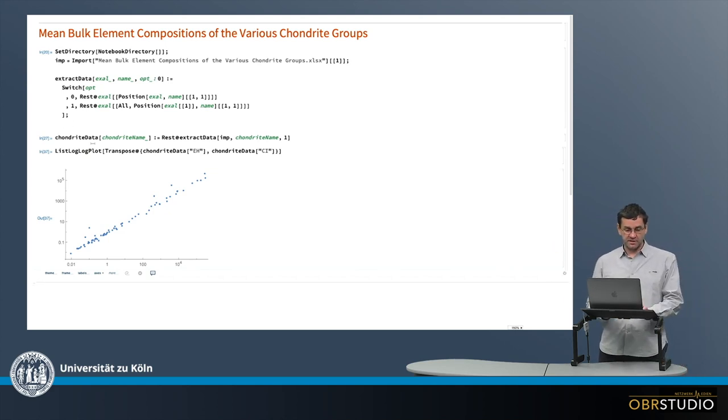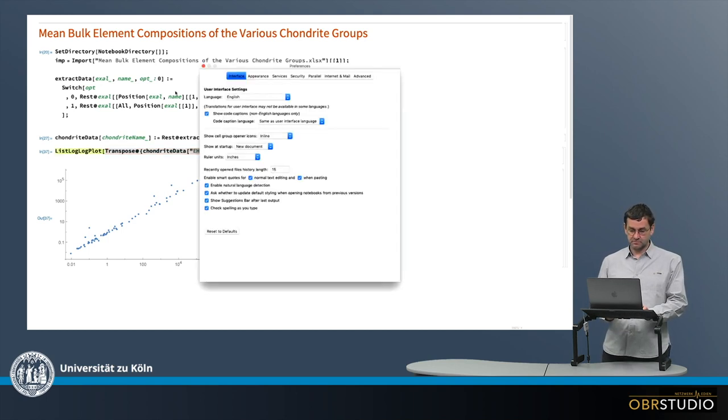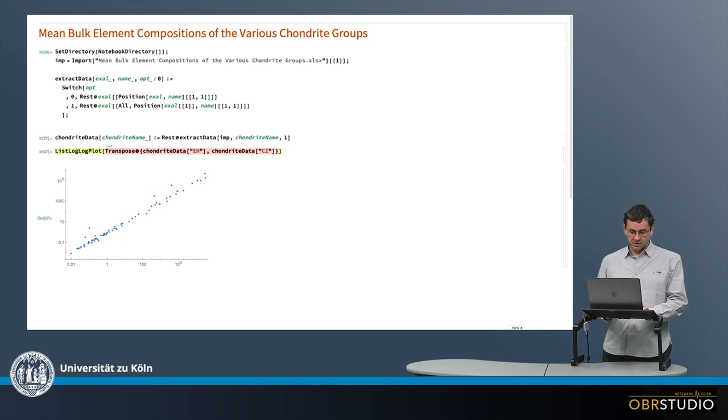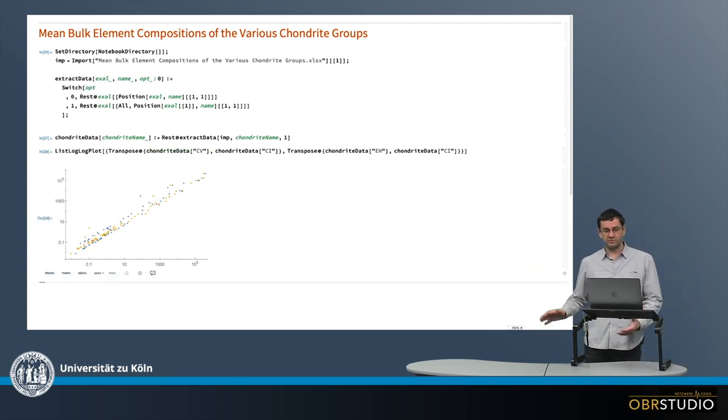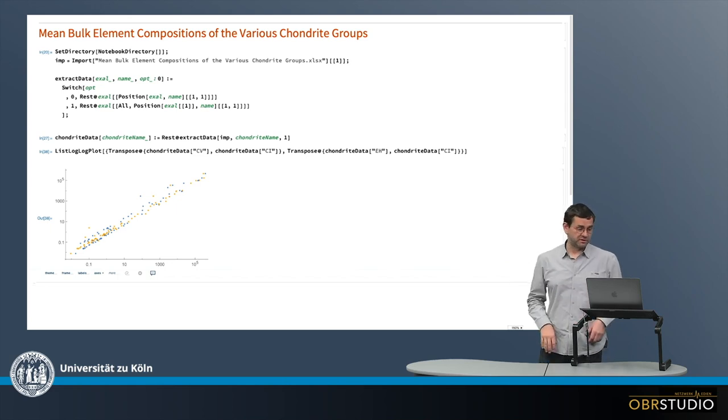And this is how it looks like when I plot the EH data in this case versus the CI data. And if this looks interesting, and you might think, how does this look for CV chondrite data in comparison. So we also add the CV data here. And then we have this kind. So this is just very briefly how we then can use these databases to have a look at this.